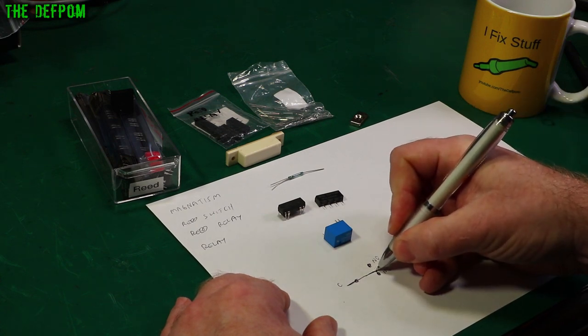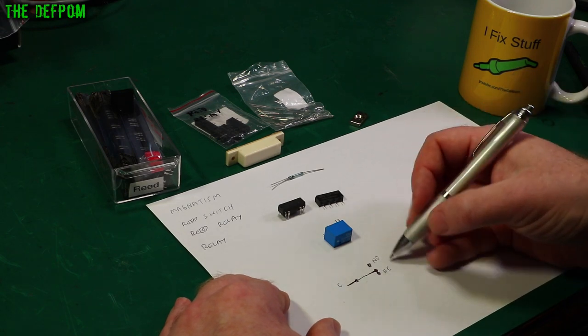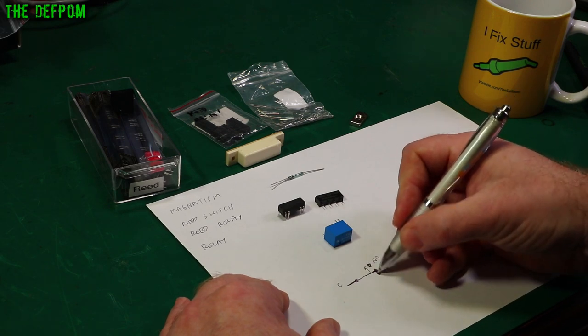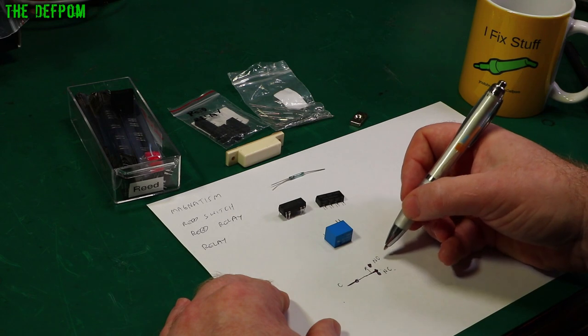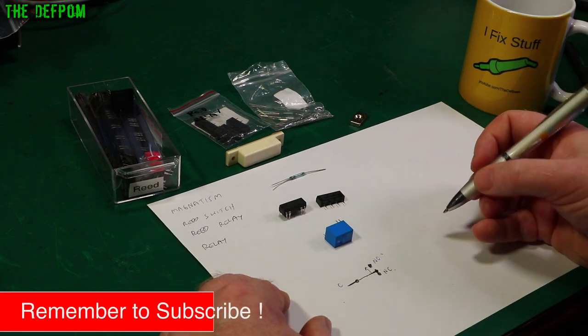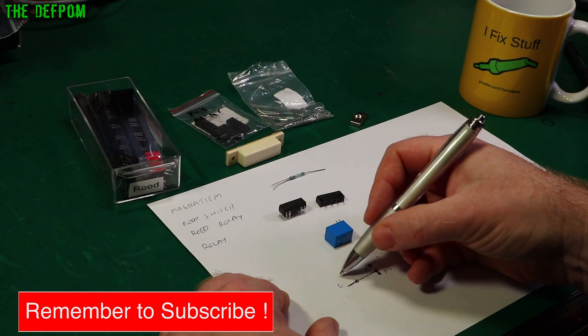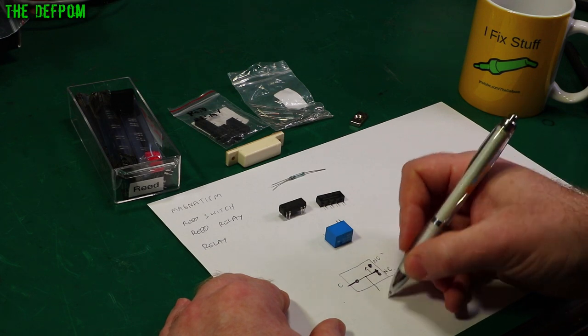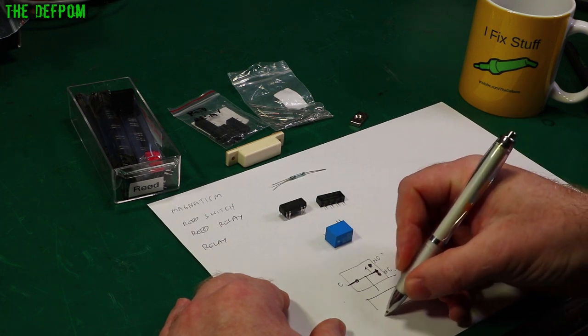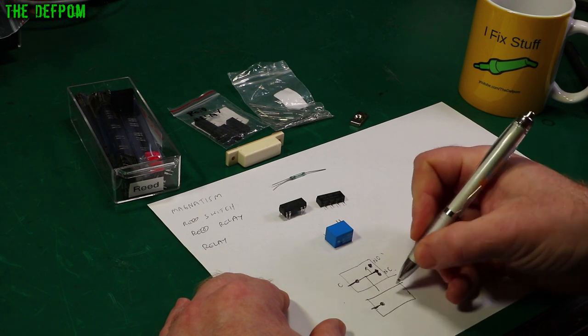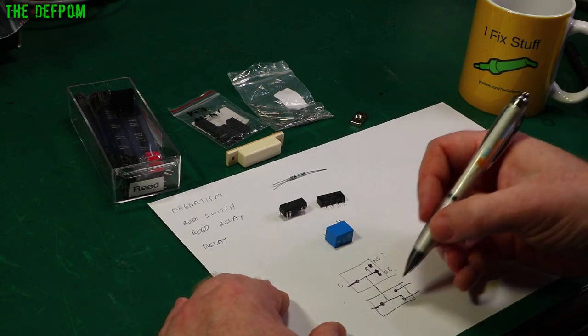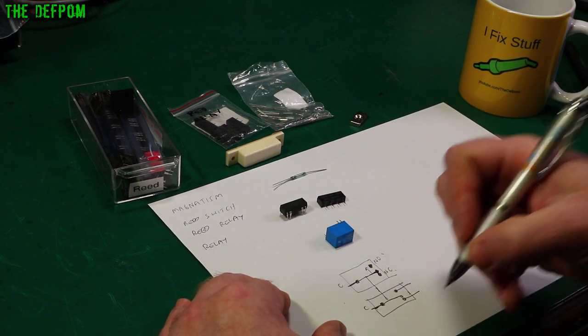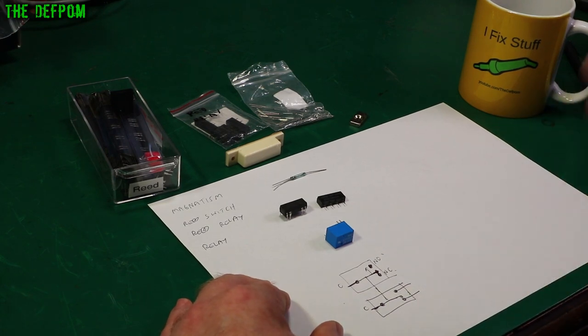Normally closed means you've got a connection point here. When it's de-energised, it's connecting through these pins. When it's energised, this moves over that way. It disconnects from this one, connects onto this one, and that then becomes closed instead. That is a single pole switch. But you can actually get a bank of these. Sometimes you get a bunch of them attached to each other. Same circuit duplicated across. Then that becomes a two pole switch, double pole. Then you can get triple pole or quadruple pole, depends on what you need.